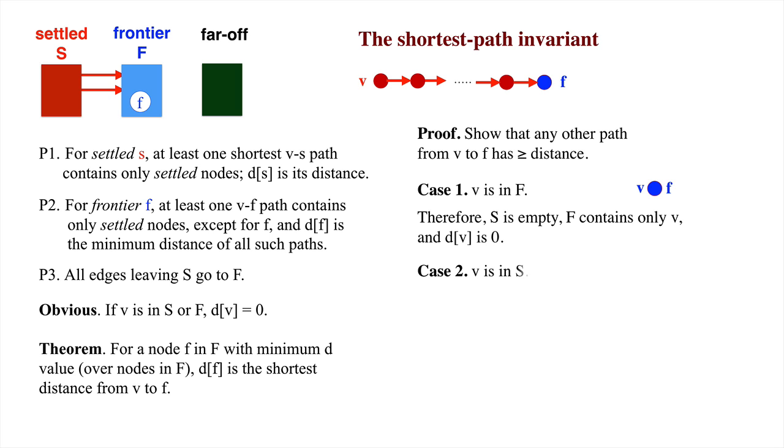Case 2: v is in the settled set. Suppose that the shown path from v to f is the one with distance d sub f. By part 2 of the invariant, d sub f is the shortest path distance over paths that contain only settled nodes, except for f.